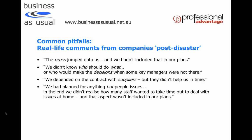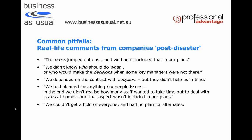'We had planned for anything but people issues, and in the end we didn't realise how many staff wanted to take time out to deal with issues at home.' Earthquakes and floods are good examples — you may have a fine building and systems, but if staff are dealing with different priorities, what is your plan to quickly access a skilled workforce? 'We couldn't get hold of everyone and had no plan for alternates' — communication and notification processes are often very poorly rehearsed and documented.